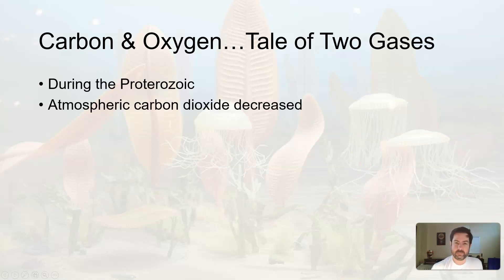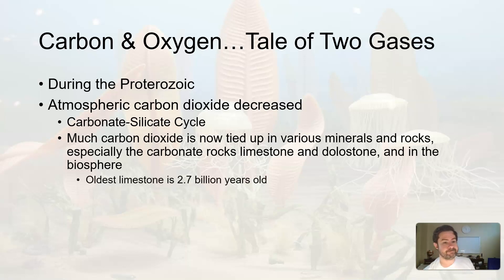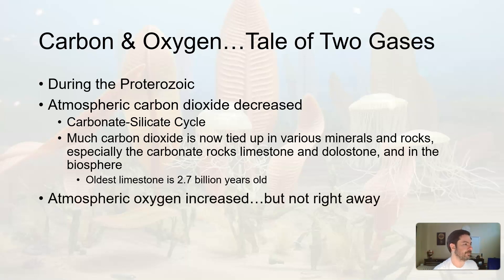During the Proterozoic, atmospheric carbon decreased, and this was due to the carbonate-silicate cycle. Much of the carbon dioxide that existed began to be tied up with various minerals and rocks, especially carbonate rocks like limestone, and in the biosphere, and that material started to sink to the bottom of the ocean. The oldest limestone is 2.7 billion years old, and carbon is a big constituent of what makes up limestone. With more and more limestone being created, it aided in the decrease in carbon dioxide. Carbon dioxide decreased mostly due to this carbonate-silicate cycle.